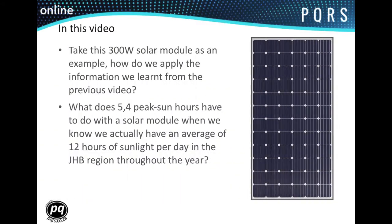If we take this 300W solar module, how do we apply the information we learned from the previous video? What does 5.4 peak sun hours have to do with the solar module when we know we actually have an average of 12 hours of sunlight per day in the Johannesburg region throughout the year?